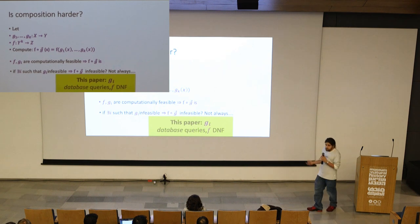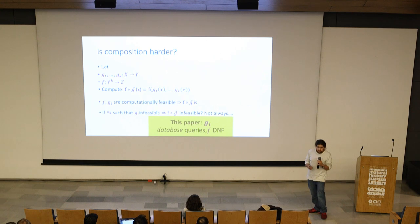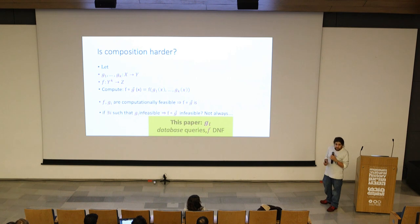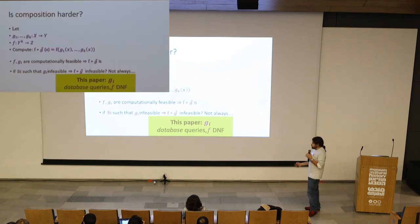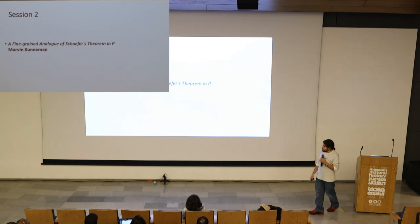The gi's will be some queries to a database, and f will be some very simple function — some DNF. We'll see some examples in which, despite one of the gi's being hard, the composition is easy to compute.